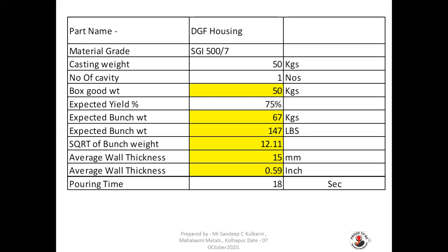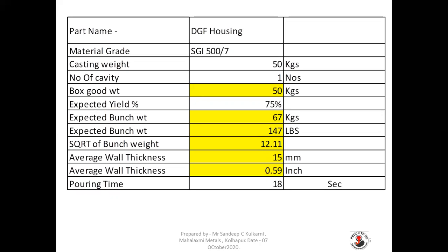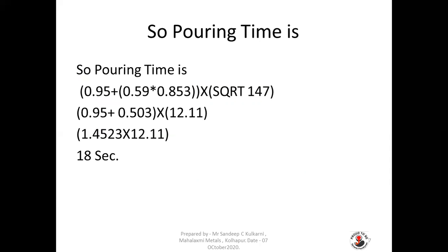Applying the formula: (0.95 + 0.59) × 0.853 × √147 = 1.4523 × 12.11 = 18 seconds. So the pouring time for the 50 kg casting with a 15 mm wall thickness is 18 seconds. This is how you calculate the pouring time for a casting.